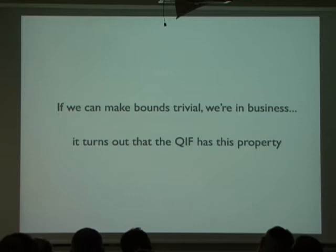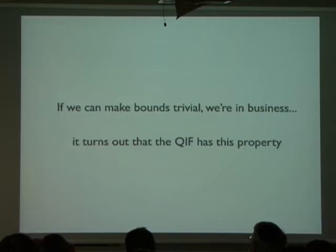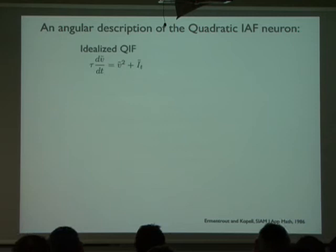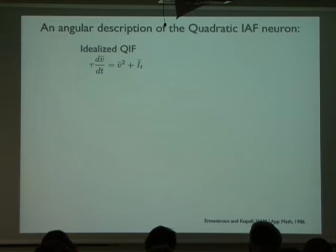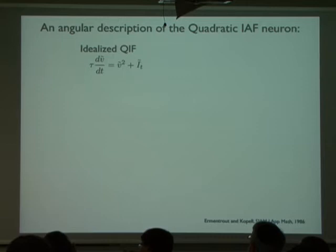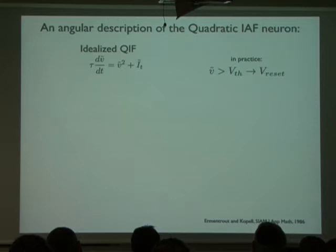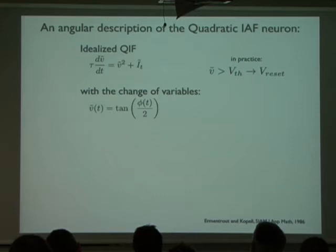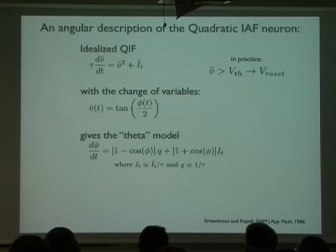If we can make the boundary conditions trivial, then we'd be in business. It turns out that the quadratic integrate-and-fire model has precisely the property that we want. The quadratic integrate-and-fire model can be written in idealized form where some rescaled voltage V-tilde receives rescaled input I. Formally, this neuron fires when it hits infinity and resets at negative infinity — it reaches infinity in finite time analytically, though for simulation you must pick a threshold.